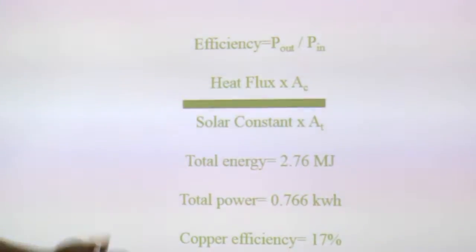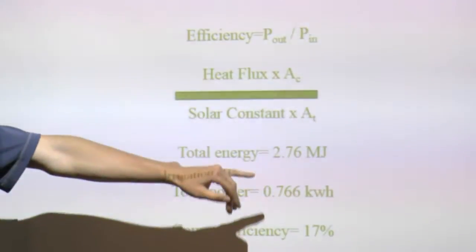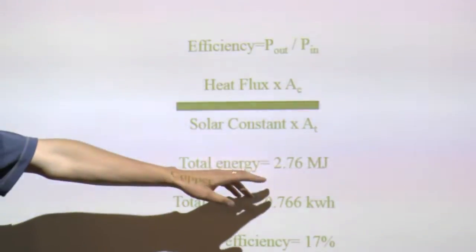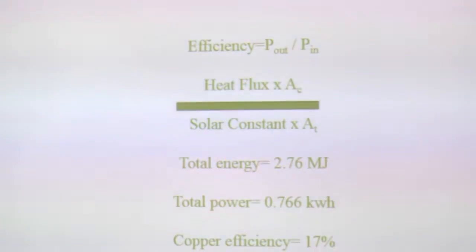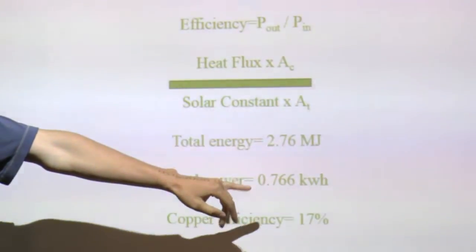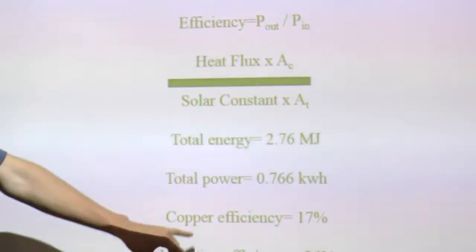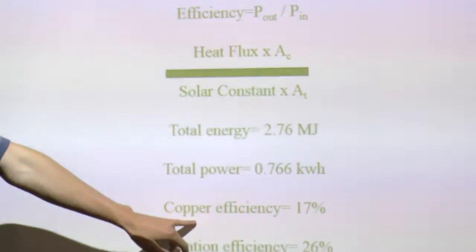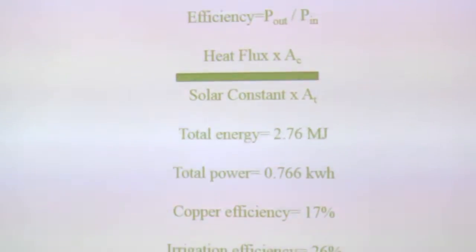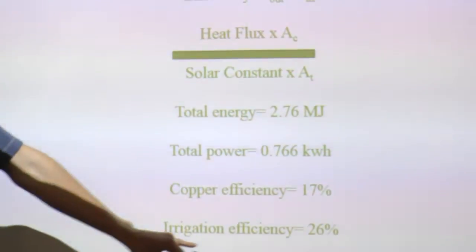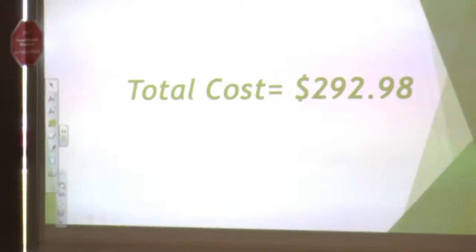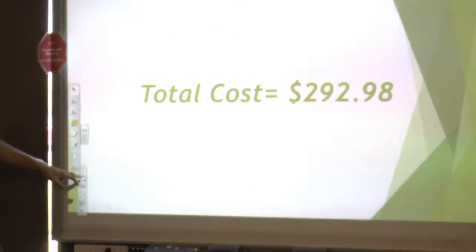The total energy that was accumulated over a six-hour period within the water was about 2.76 megajoules, which is a good deal of energy. Total power was about 0.766 kilowatt hours, and then the efficiency of the copper tubing, 50-foot of the copper tubing, was about 17%. Copper is a good thermal conductor, and then the irrigation was just plastic tubing, but good efficiency, 26%. And wood, some piping, some sand, that sort of thing. It was nothing too expensive.